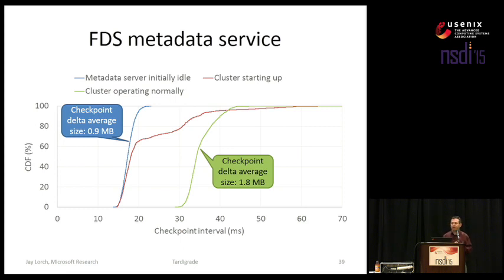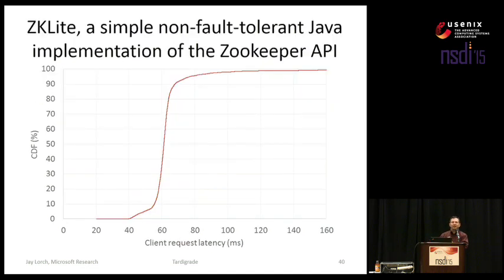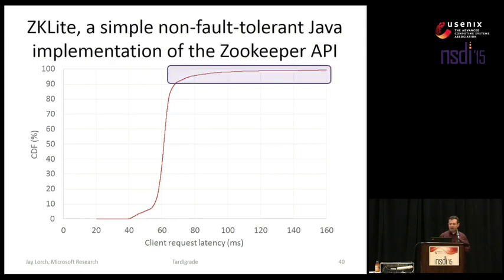Another service we applied replication to is what we call ZK-Lite — a coordination service, an implementation of the ZooKeeper API, but much simpler and less code than ZooKeeper itself because it doesn't worry at all about replicating its data or fault tolerance. It's just a single server running a key-value store that happens to service the ZooKeeper API. We then take that simple service and run it within tardigrade to turn it into a fault-tolerant equivalent to ZooKeeper. The cost is increased client latency — under modest load, from 40 to 80+ milliseconds. Because we wrote ZK-Lite in Java, a garbage-collected language, we occasionally see latencies in excess of 100 milliseconds, since a GC event mutates a lot of memory that must be disseminated to the backup. There are many more performance results in the paper.